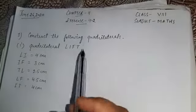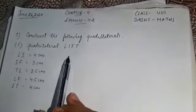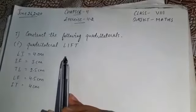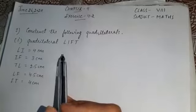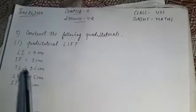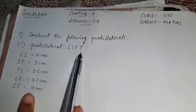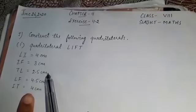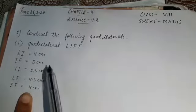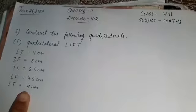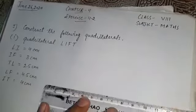Good morning students. Let's start Exercise 4.2. In this exercise, three sides of a quadrilateral along with two diagonals will be given. These are the measurements of the first quadrilateral, which is LIFT — three sides and two diagonals are given. First of all, let's draw the rough diagram. It is very important to draw a rough diagram.